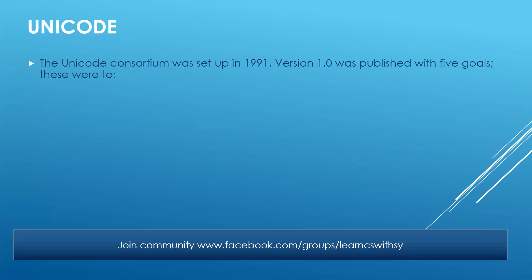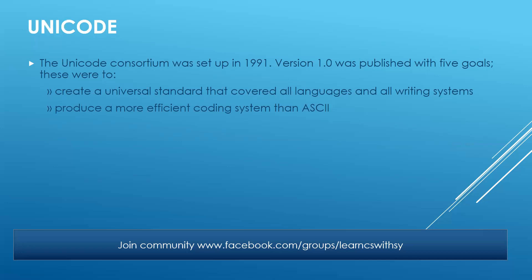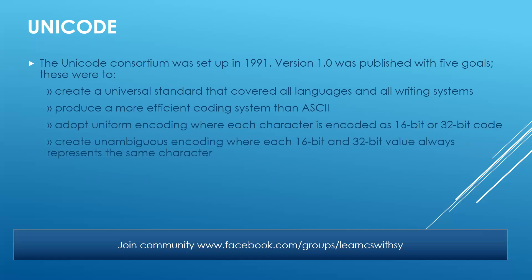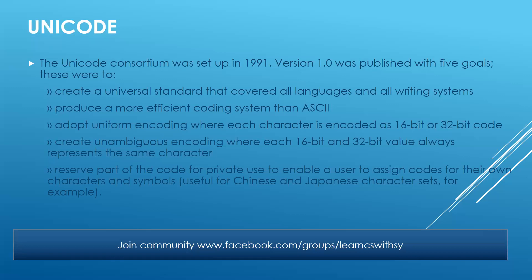The Unicode consortium was set up in 1991, and the version published had five goals: create a universal standard covering all languages and all writing systems; produce a more efficient coding system than ASCII; adopt uniform coding where each character is encoded as 16-bit or 32-bit — that is two bytes or four bytes; create unambiguous encoding where each 16-bit and 32-bit value always represents the same character, not different characters; and reserve part of the code for private use to enable users to assign codes for their own characters and symbols.